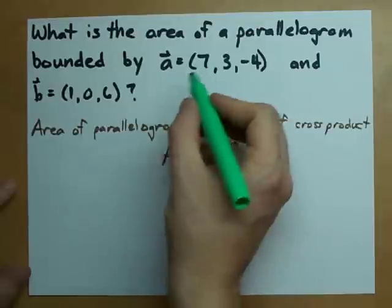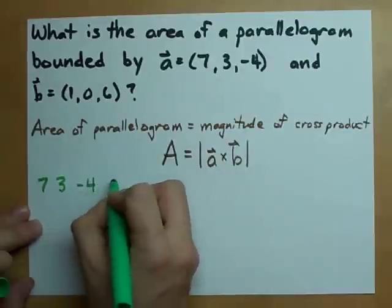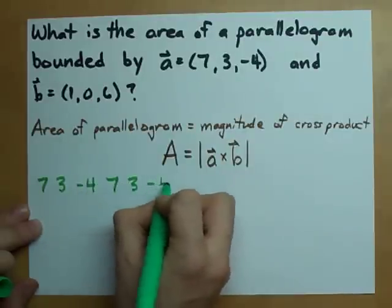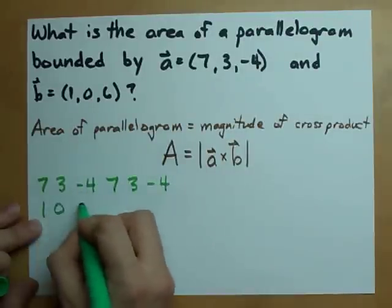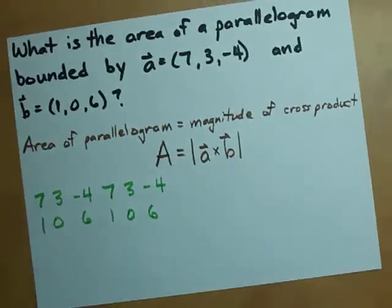How do you find the cross product between two vectors? Well, I got my own little method that I like to use. 7, 3, minus 4, 7, 3, minus 4, 1, 0, 6, 1, 0, 6. See, I just wrote out the first vector twice and the second vector twice.